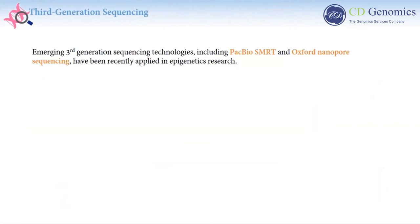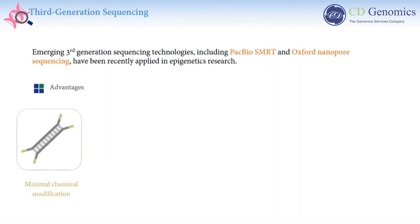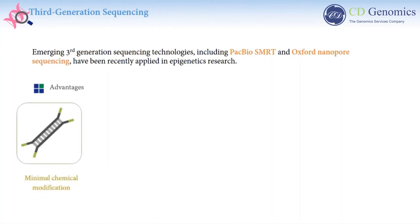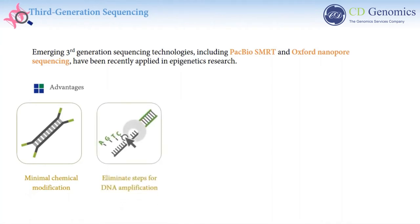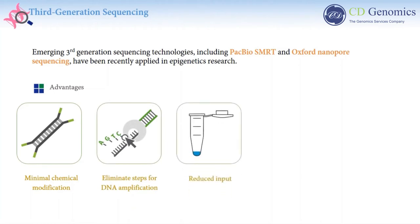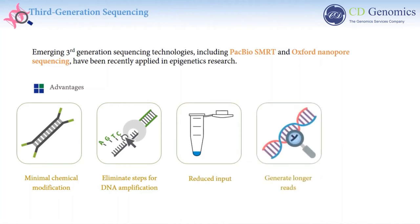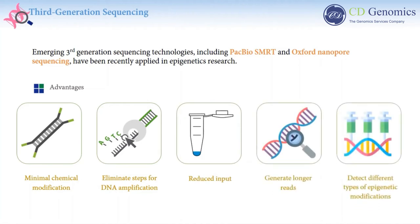Emerging third-generation sequencing technologies, including PacBio single-molecule real-time sequencing and Oxford Nanopore sequencing, have been recently applied in epigenetics research. They have many advantages over NGS: minimum chemical modification during library preparation, elimination of the requirement for DNA amplification, reduced requirement for input DNA, the ability to generate longer reads, and the ability to directly detect different types of epigenetic modifications.